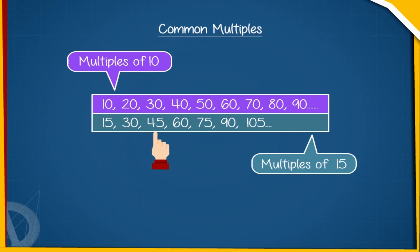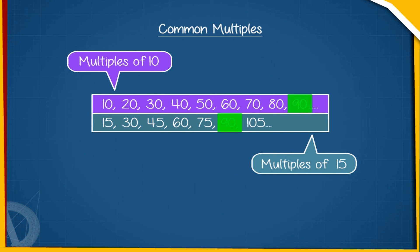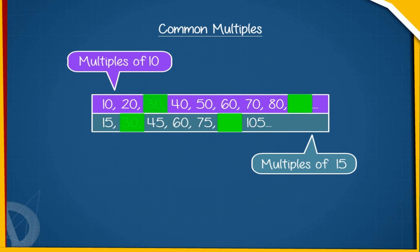...45, 60, 75, 90, 105, and so on. On comparing, we see that there are some multiples which are common for both 10 and 15. The numbers 30, 60, 90, etc. are multiples of both 10 and 15. Therefore, they are the common multiples of 10 and 15. Common multiples are infinite.